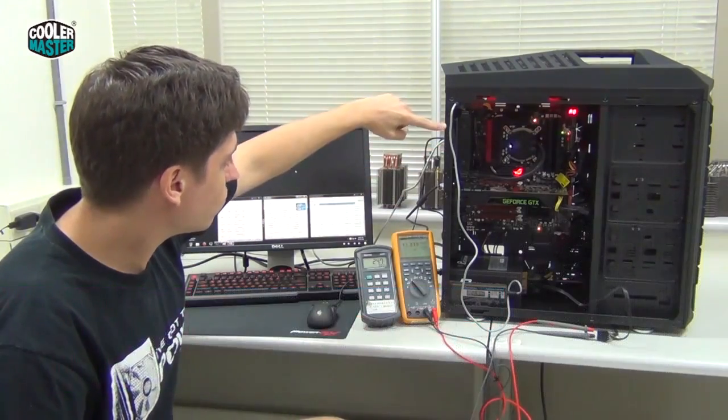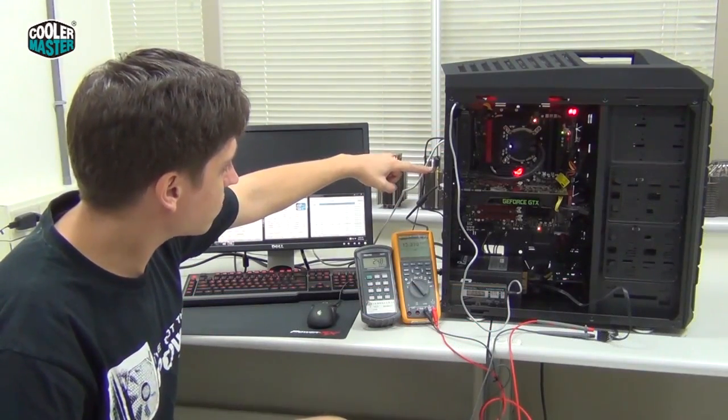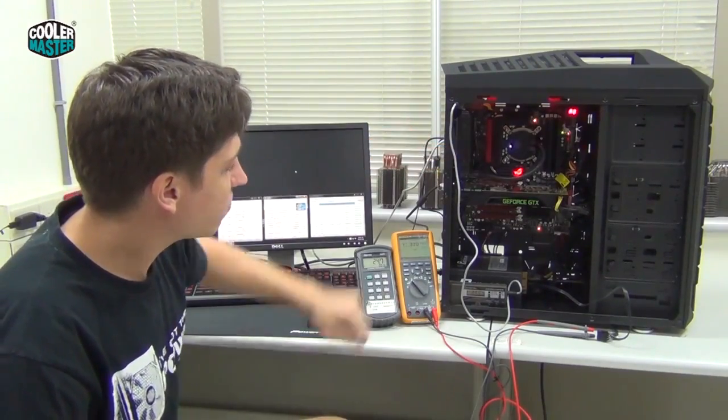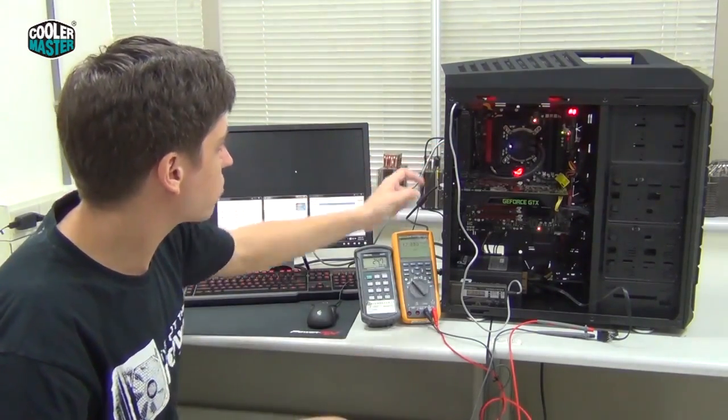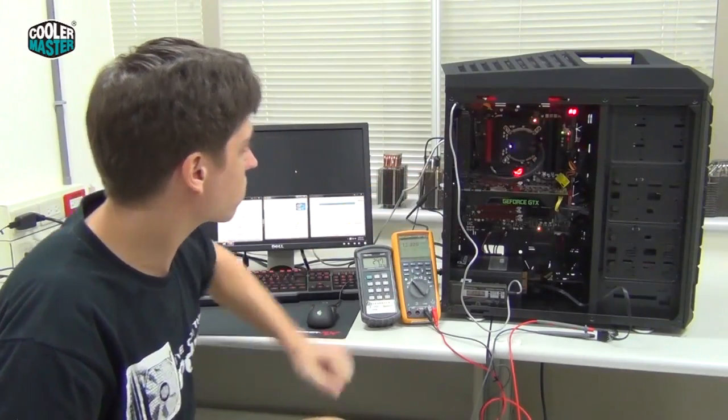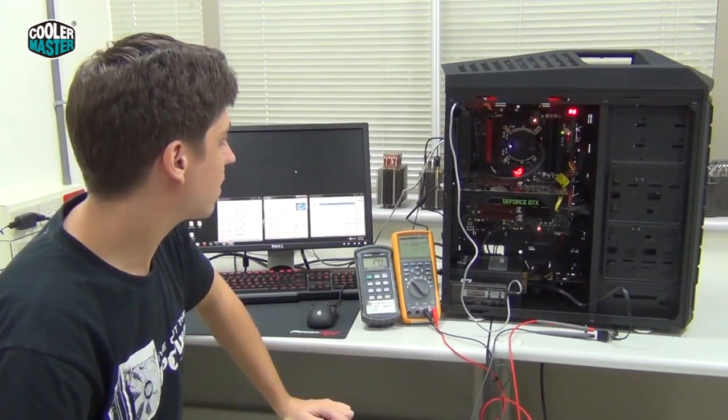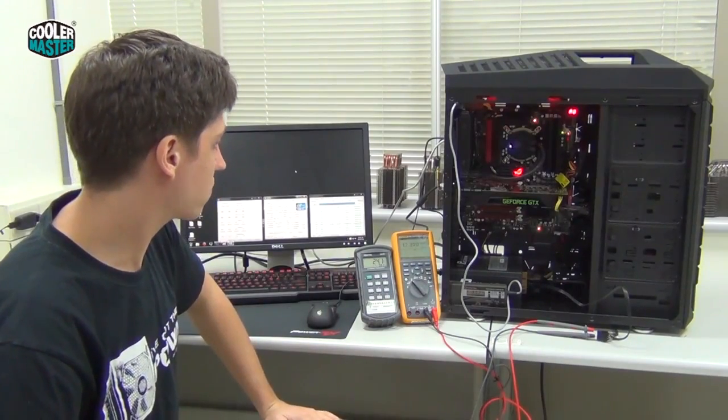So for the Seidon, we measure the temperature on the outside. This is the air temperature that cools the radiator. And for the Intel stock heatsink, we measure the temperature above the CPU heatsink. So again, we measure the air temperature that goes into the heatsink to get an idea of how well the cooling system works and performs.